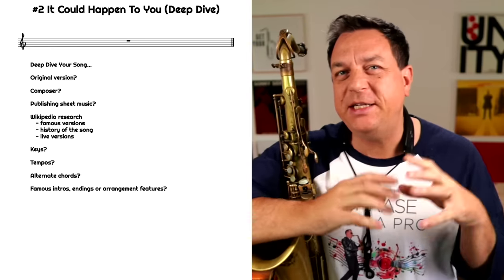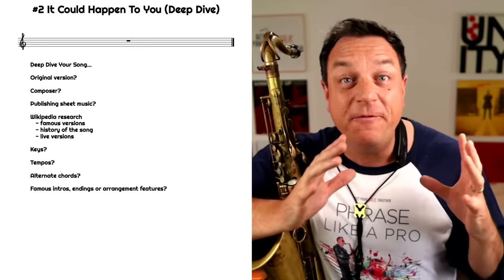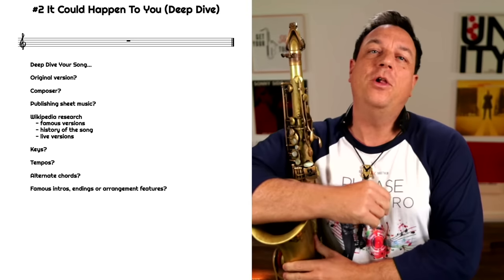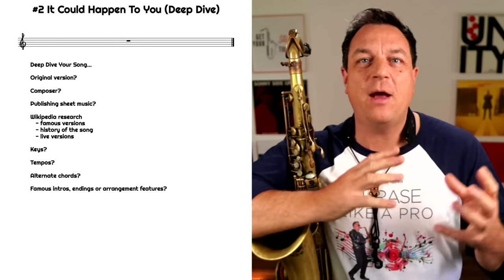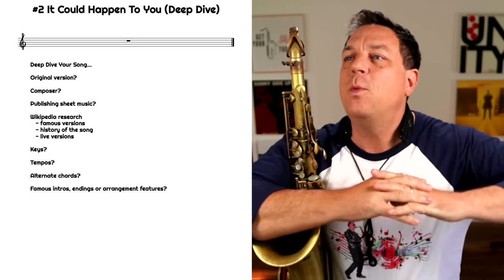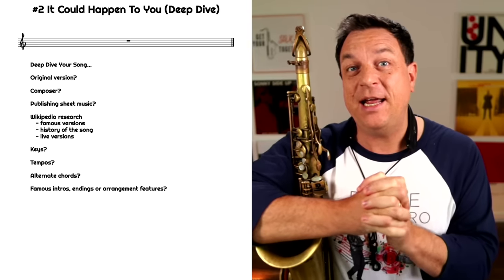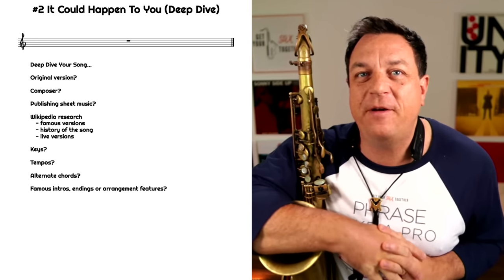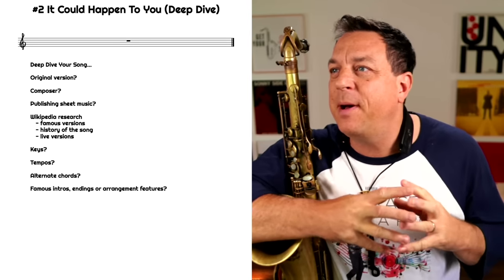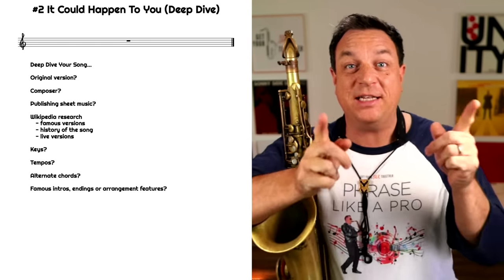Step two is the deep dive into the song. You're going to explore this song and get to grips with all the different versions so you're not missing out on something really important. First of all, try and find the original recording and work out who wrote it. 'It Could Happen To You' is written by Jimmy Van Heusen with lyrics by Johnny Burke, and it was first featured in 1944 in a film called 'And The Angels Sing,' sung by Dorothy Lamour, and it sounded like this.